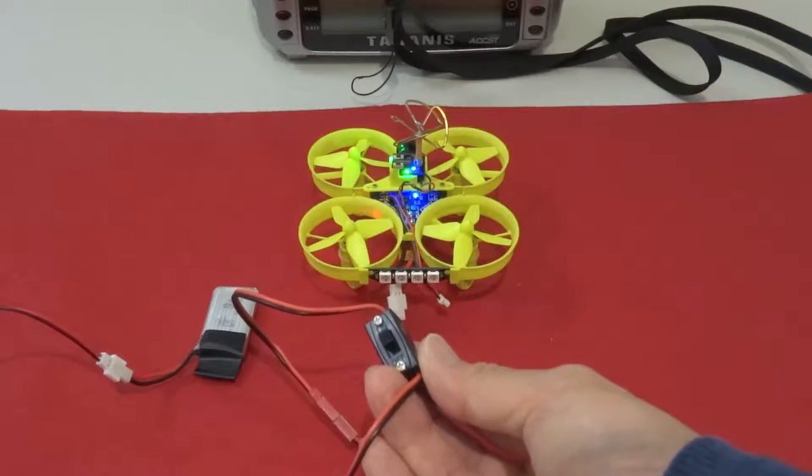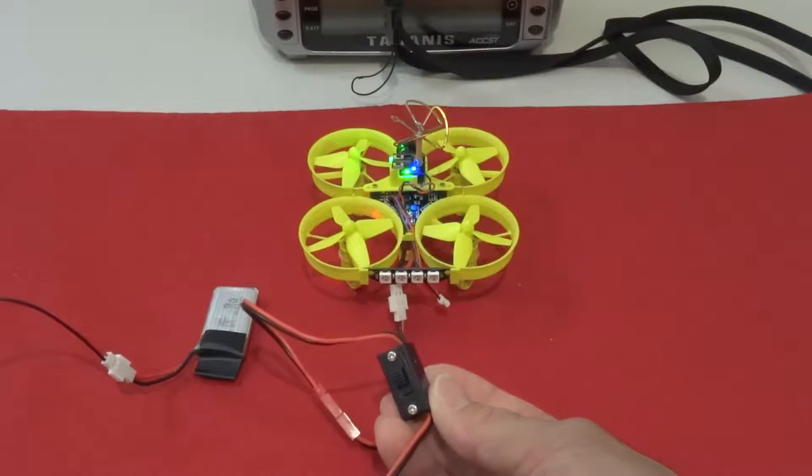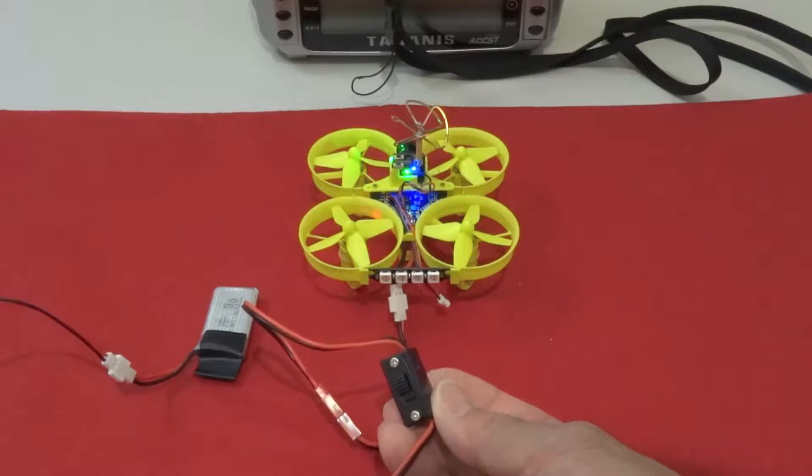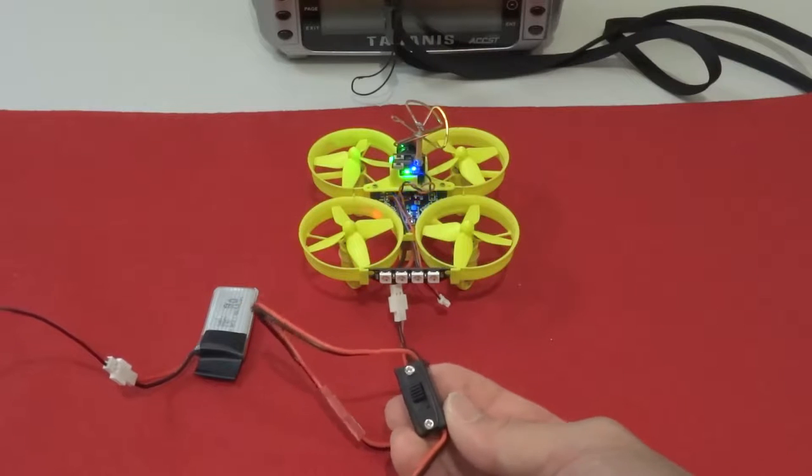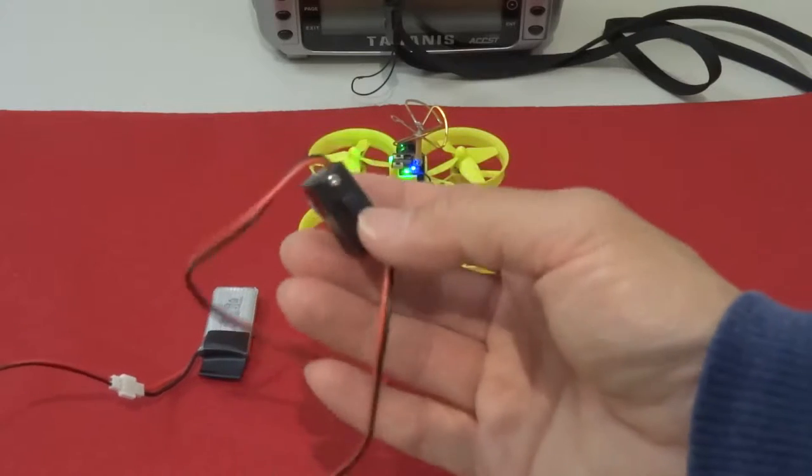So this will make your FrSky receiver binding much easier, or any other type of receiver that requires you to hold the button and connect the battery at the same time, if the quad doesn't have an on-off switch. Most of the micro FPV quads don't have an on-off switch, so this is the best solution for you.